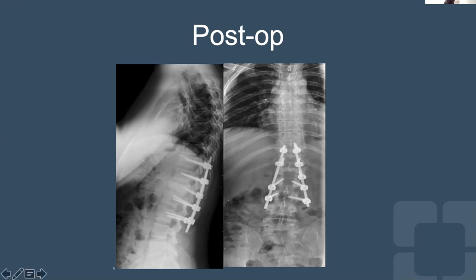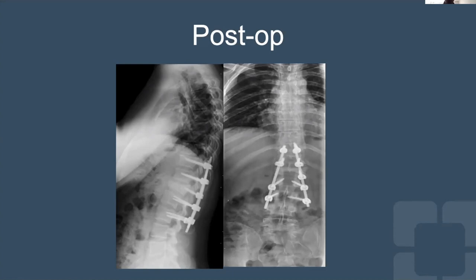There are many surgical approaches for this type of injury. Some surgeons perform a corpectomy with short construct (one above, one down), but that requires anterior column reconstruction. Without anterior reconstruction you need a longer construct. Because I was able to get a screw at the index level, I went two above, two below — though some might go three or four levels. You will never be faulted for being conservative and going longer, because hardware failure after underconstruction leads to major revision surgery.